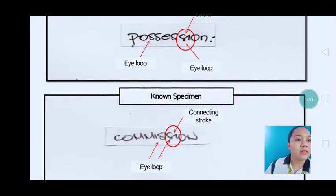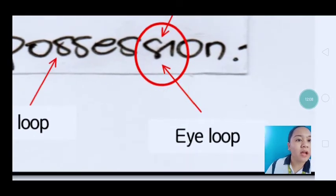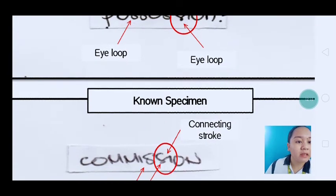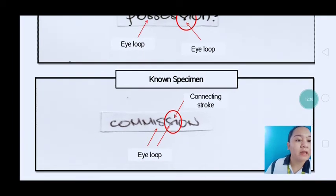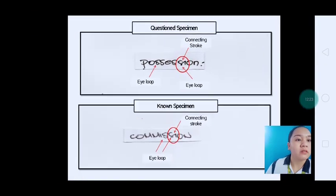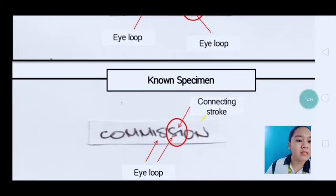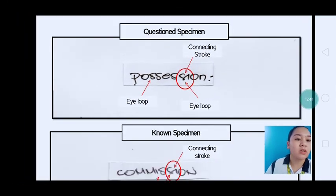Another characteristic is that there is no dot on the letter I — in 'possession,' there is no dot above the I, and in the known specimen there is also no point that would complete the letter I. In the lateral spacing, there is minimal spacing — the letters are compact, with compact spacing between each letter.